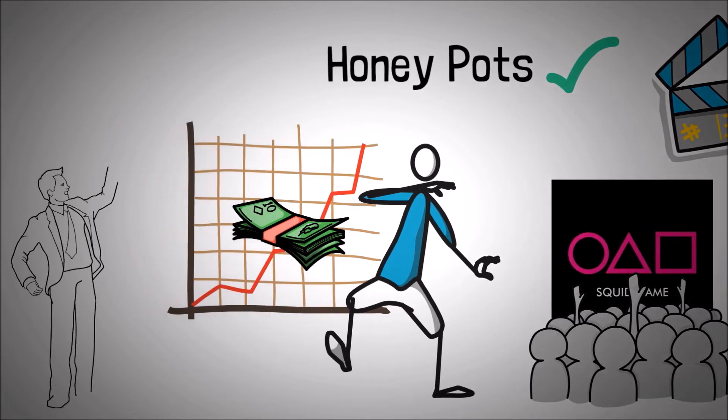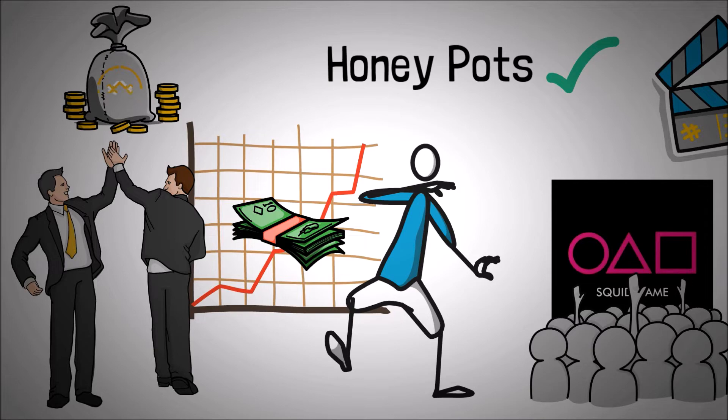It rapidly rose in value shortly after launch, but the media quickly noticed investors were unable to sell any of their tokens. Eventually, the founders dumped their tokens and ran off with millions of dollars worth of Binance coins.